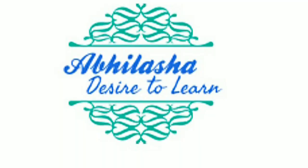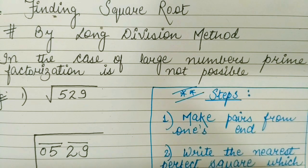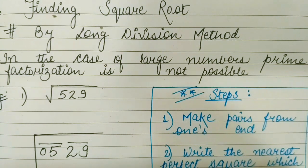The easiest way to calculate square root is by prime factorization method. But in the case of large numbers where prime factorization is not possible, we use long division method.